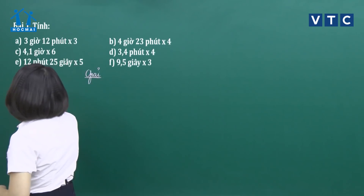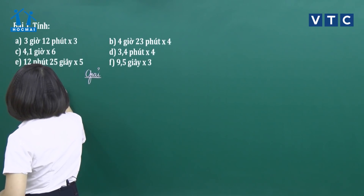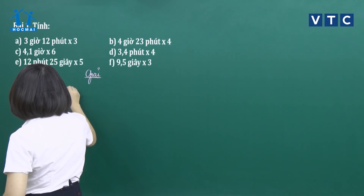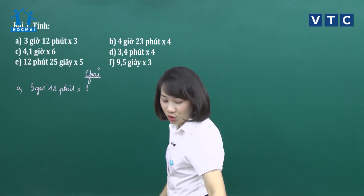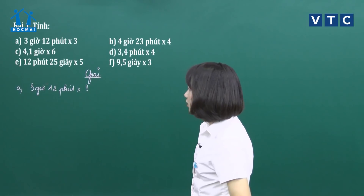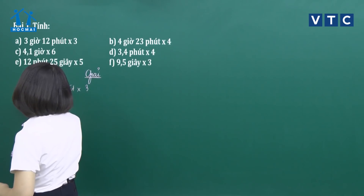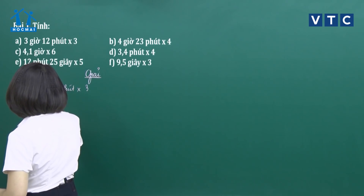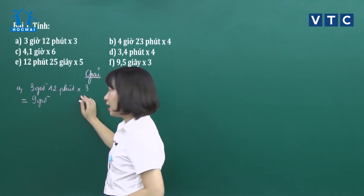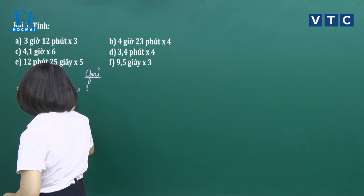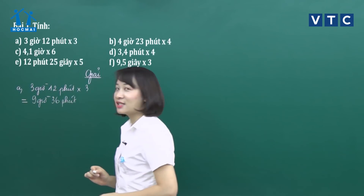Ở câu A: các con có 3 giờ 12 phút nhân với 3. Theo đúng quy tắc, chúng ta nhân từng phần của số đo thời gian với số đó. Lấy 3 giờ nhân 3 được 9 giờ. Lấy 12 phút nhân 3 được 36 phút. 36 phút không đổi được ra giờ, nên chúng ta giữ nguyên kết quả: 9 giờ 36 phút.